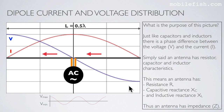Here is a snapshot of the previous animation. When the current is high, the voltage is low; when the voltage is high, the current is low. Just like capacitors and inductors, there is a phase difference between the voltage and the current in an antenna. Simply said, an antenna has resistor, capacitor, and inductor characteristics. This means an antenna has resistance, capacitive reactance, and inductive reactance — thus an antenna has impedance.